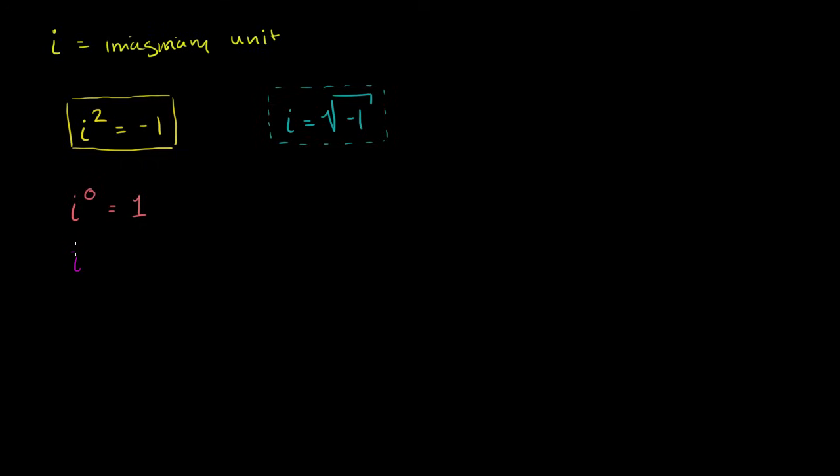Then you say, OK, what is i to the first power? Well, anything to the first power is just that number times itself once. So that's just going to be i, really by the definition of what it means to take an exponent. So that completely makes sense.